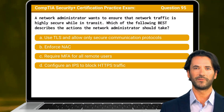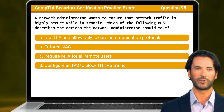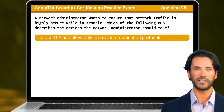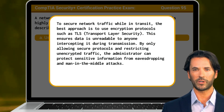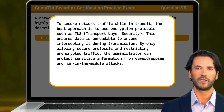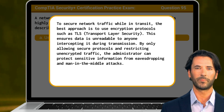Question 95: A network administrator wants to ensure that network traffic is highly secure while in transit. Which of the following best describes the actions the network administrator should take? The answer is A, use TLS and allow only secure communication protocols. To secure network traffic while in transit, the best approach is to use encryption protocols such as TLS. This ensures data is unreadable to anyone intercepting it during transmission. By only allowing secure protocols and restricting unencrypted traffic, the administrator can protect sensitive information from eavesdropping and man-in-the-middle attacks.